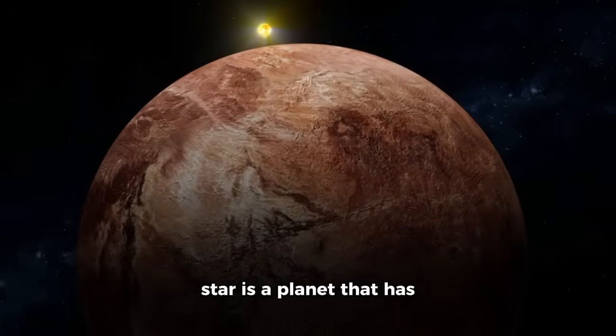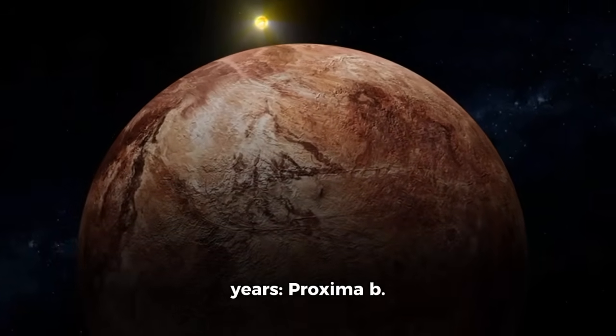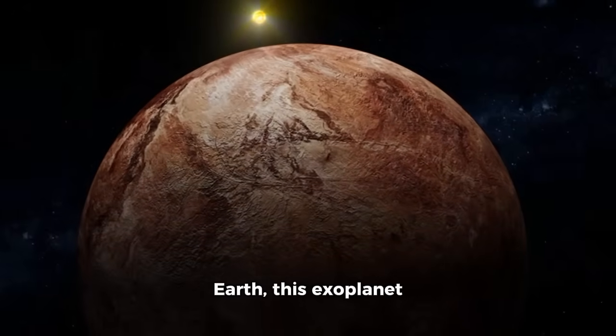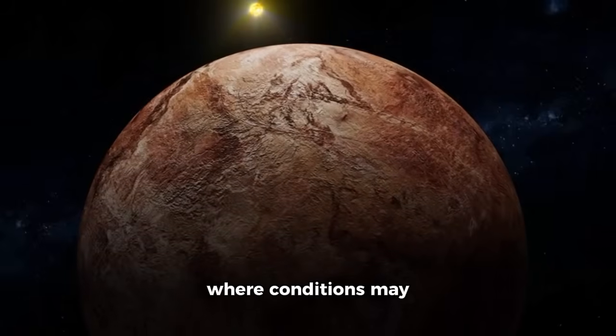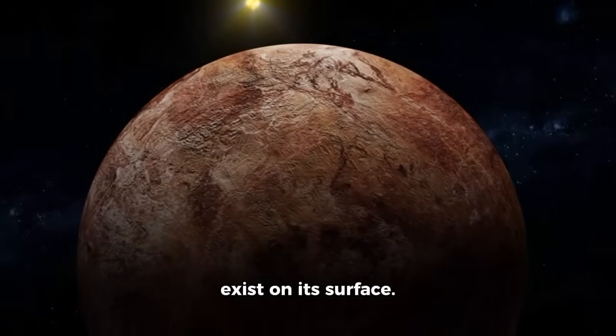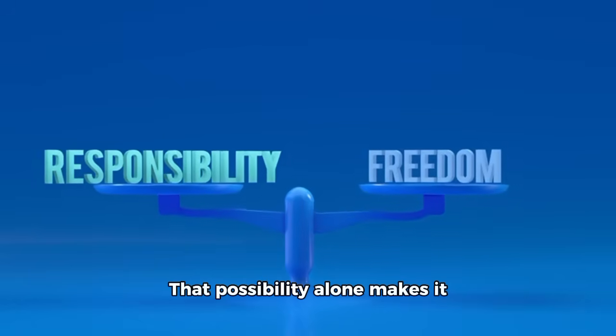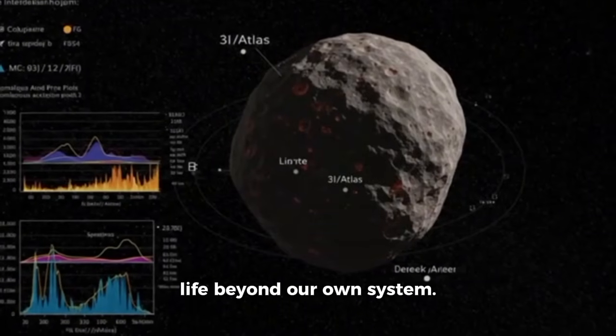Orbiting this red dwarf star is a planet that has fascinated scientists for years, Proxima b. Slightly larger than Earth, this exoplanet orbits within the so-called habitable zone, where conditions may allow liquid water to exist on its surface. That possibility alone makes it one of the most compelling candidates in the search for life beyond our own system.